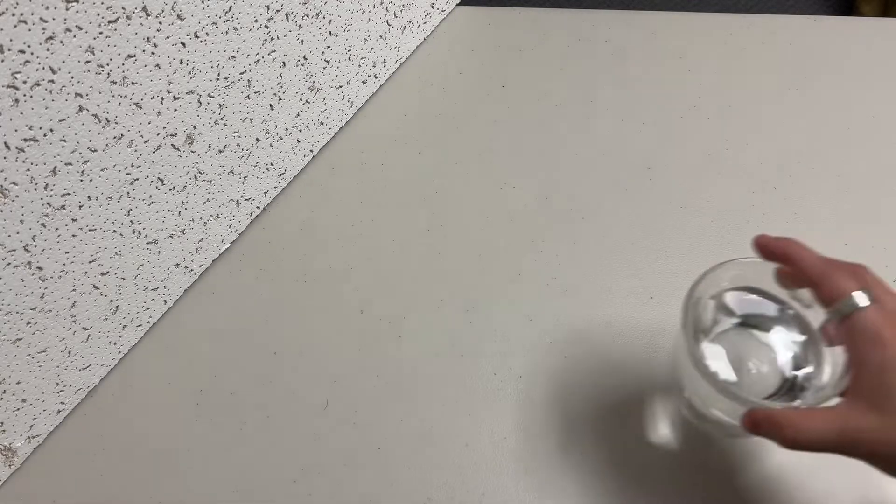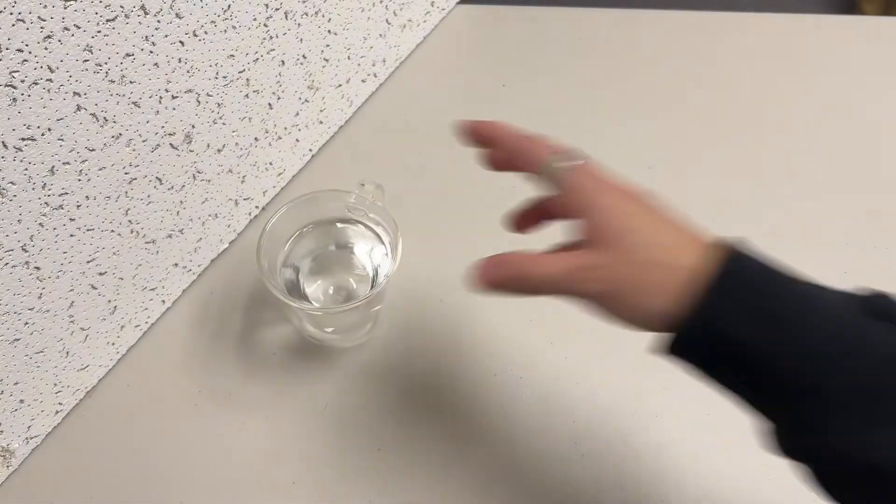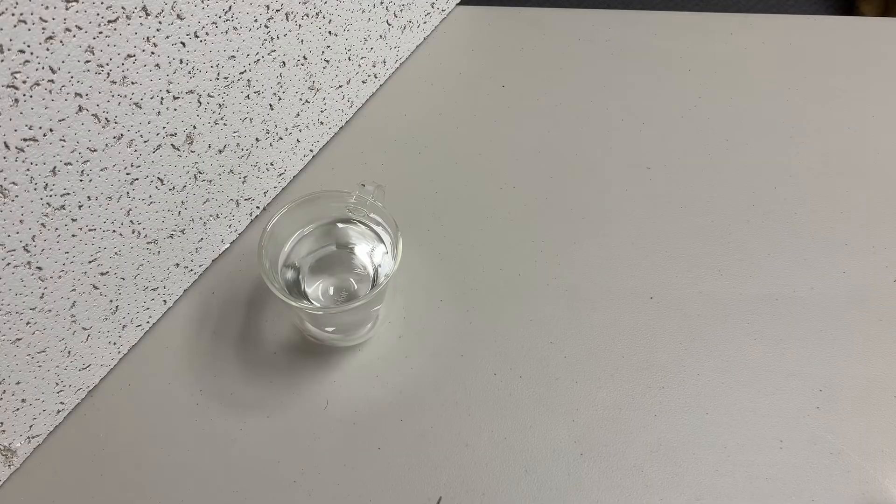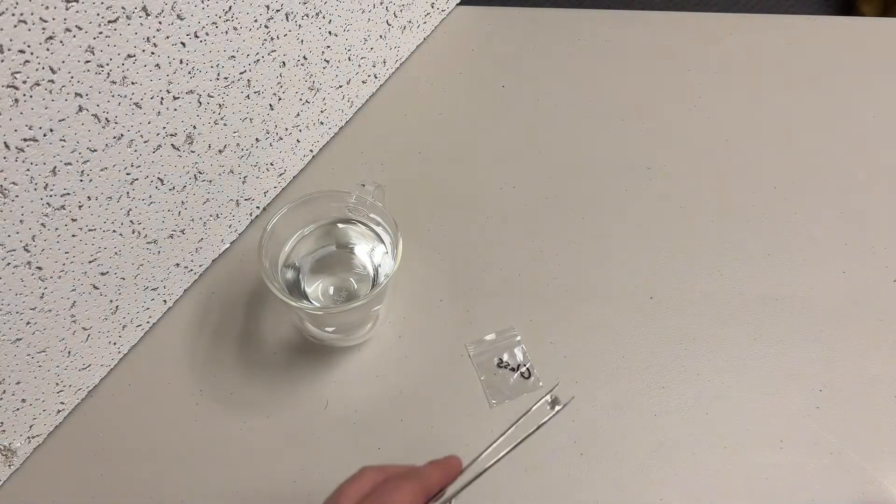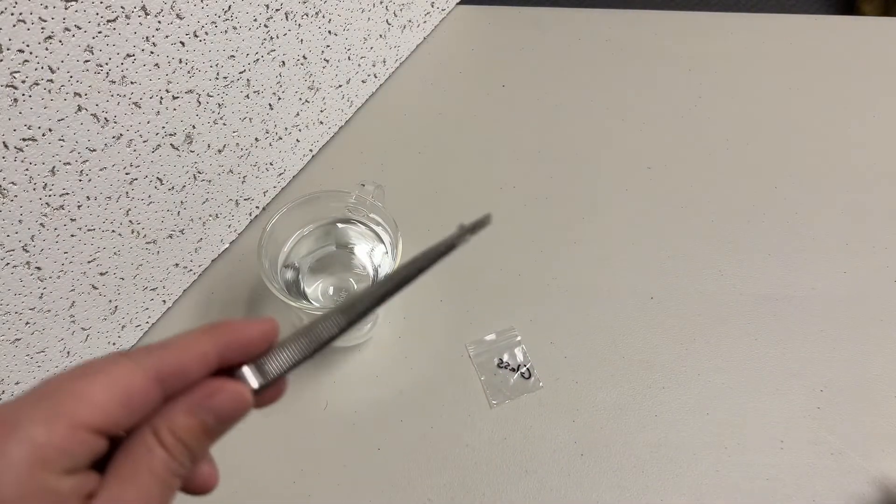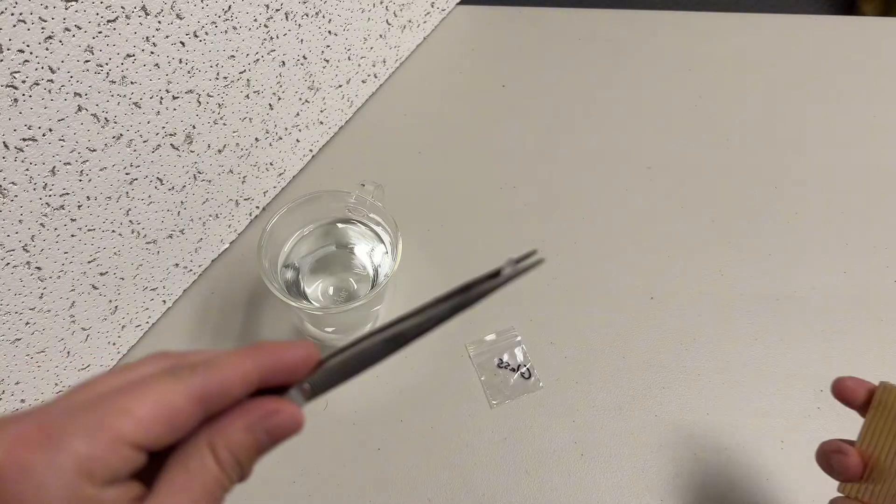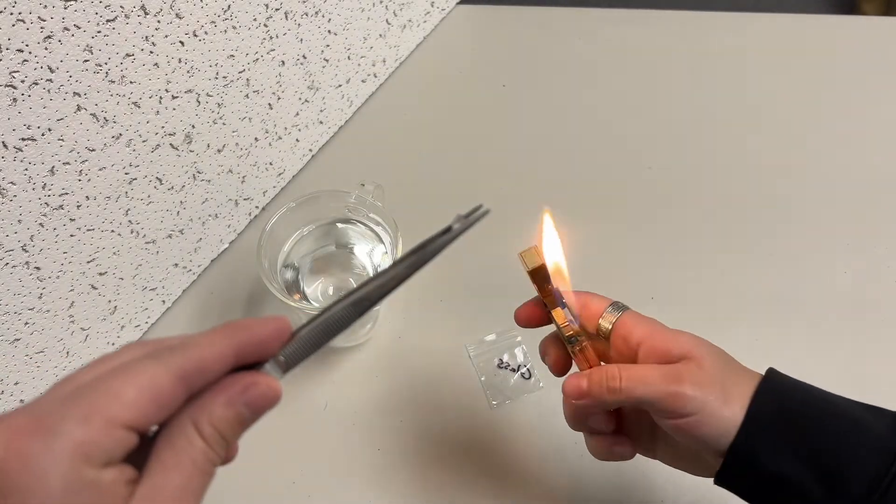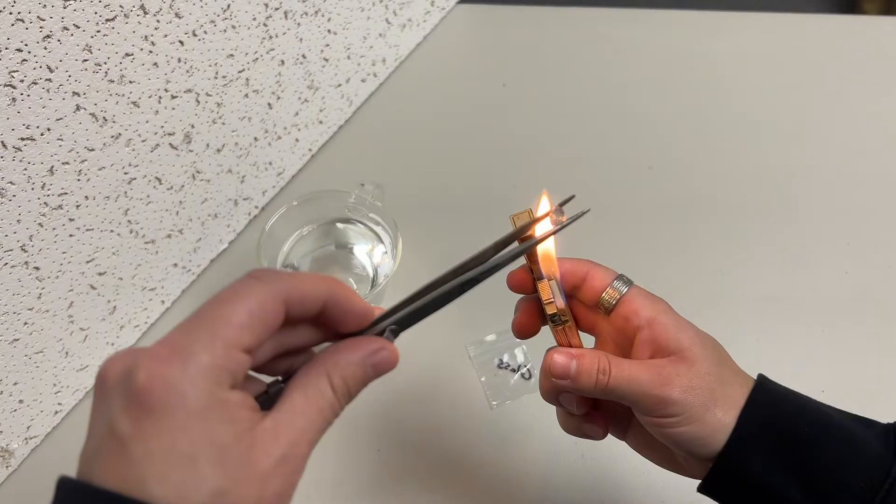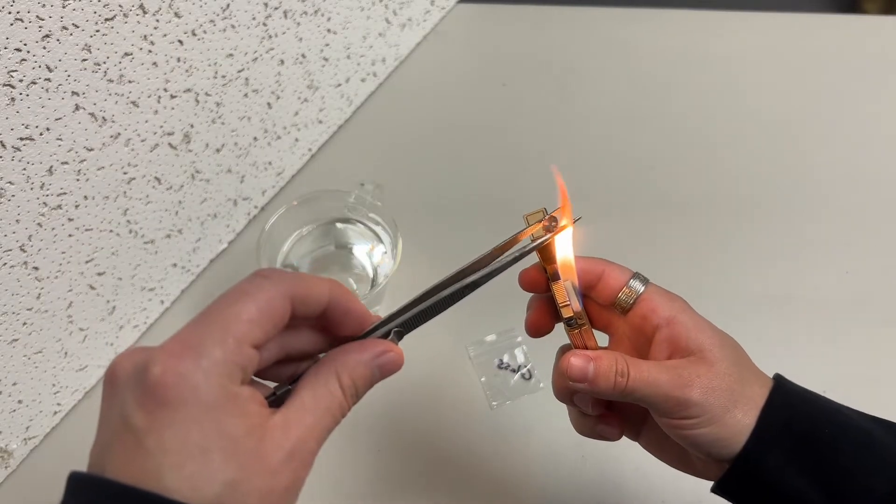Here's how to test diamonds with water and a lighter. You're going to grab your cup of water and your stone. This stone to the naked eye might look like a diamond, but in truth it's just a piece of glass. We grab our lighter and let it burn for a little bit.